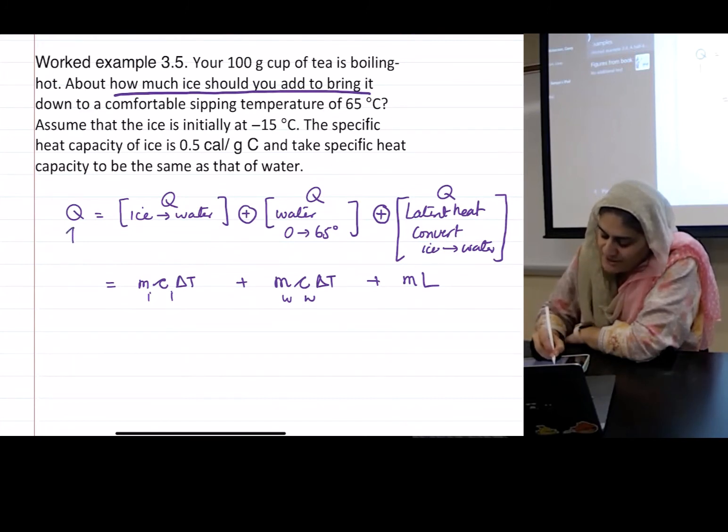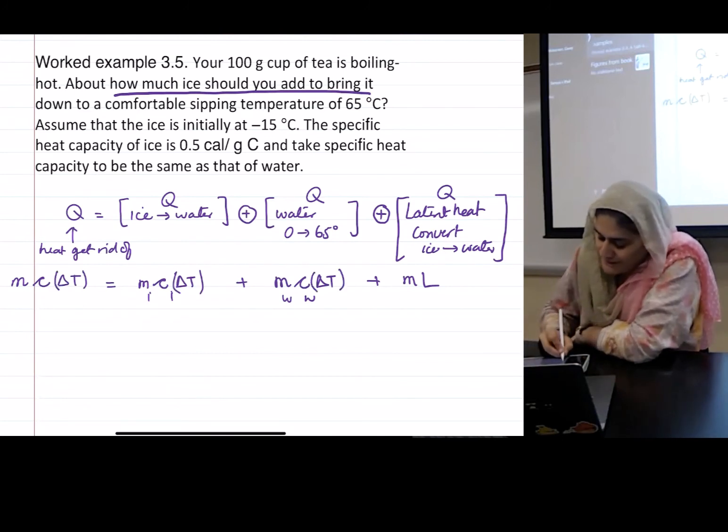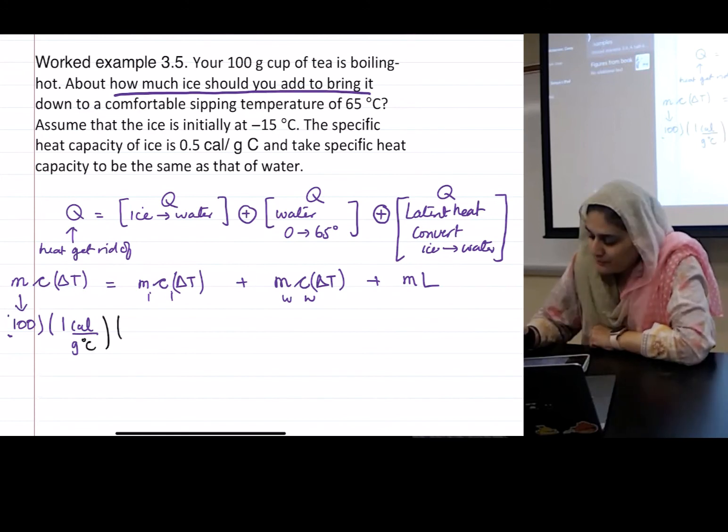And what would this be? This is the amount of heat you want to get rid of. How will that be? Can I call this m c delta T? What's the m for this one? That's given, 100 grams. And what is the c for ice? It's the same as that for water, which can be taken as one calorie per gram degree Celsius. And what is the delta T that you want?